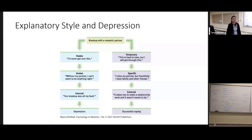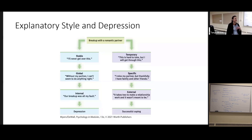Depressed people might frame things in ways that are just not adaptive. Let's say there's a breakup with a romantic partner — it's not very helpful to tell yourself 'I'll never get over this.' A more useful, more adaptive thought could be 'this is hard, but I'll get through this.' That has hope. You might also say 'without my partner I can't seem to do anything' — that's a maladaptive cognition. It might be more adaptive to reframe it as 'I miss my partner, but I have family and other friends and there are other fish in the sea.' More adaptive cognitions lead to more successful coping.